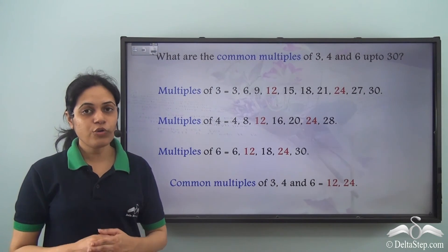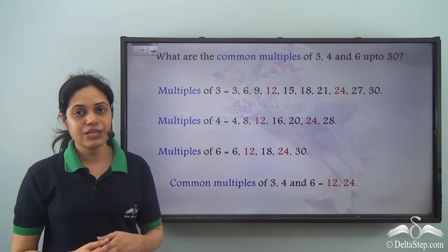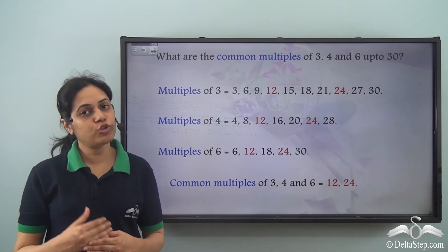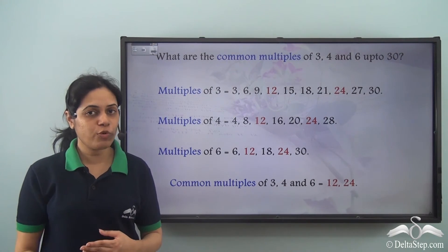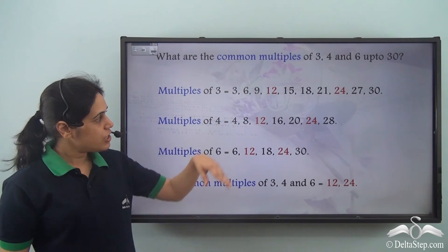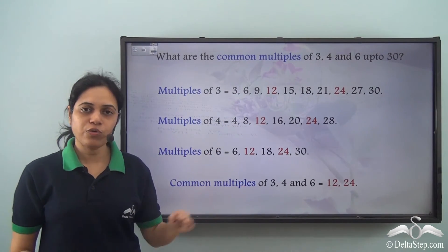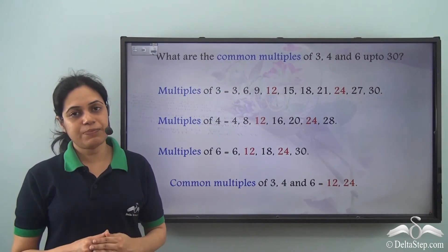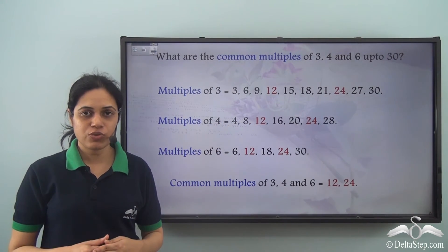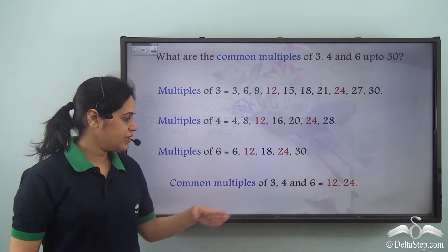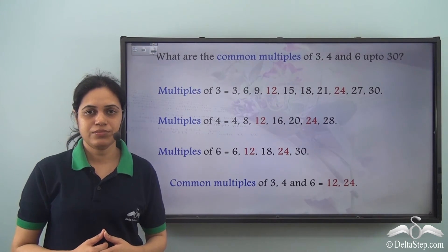So this is how you can find the common multiples of 2 or more numbers. You first need to list down their multiples individually and then find the common multiples.